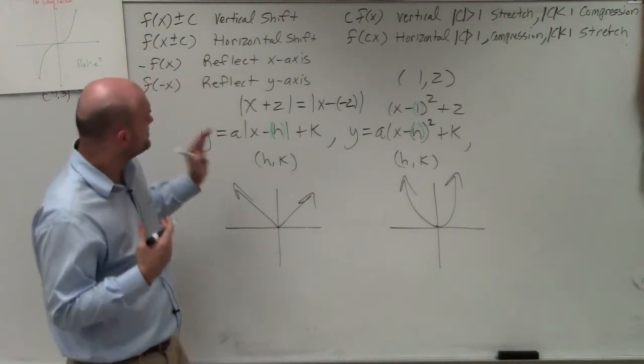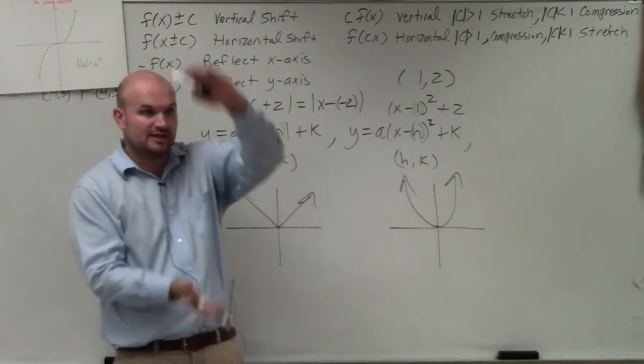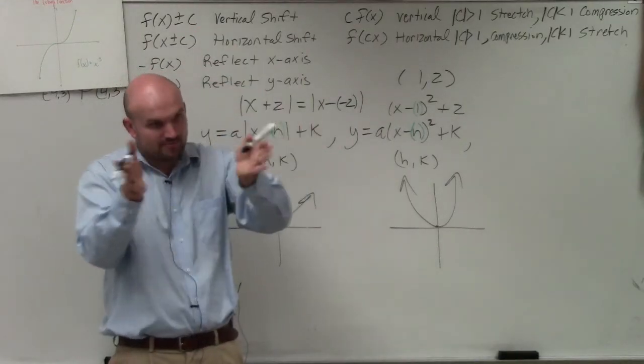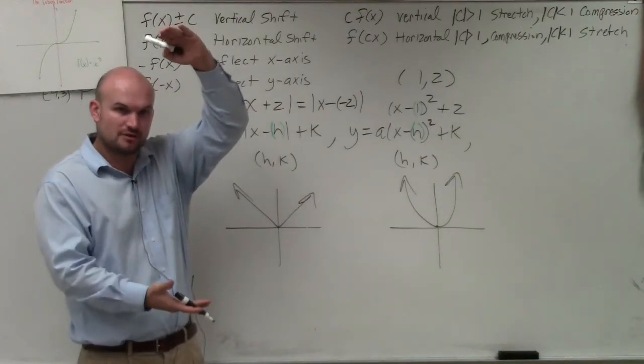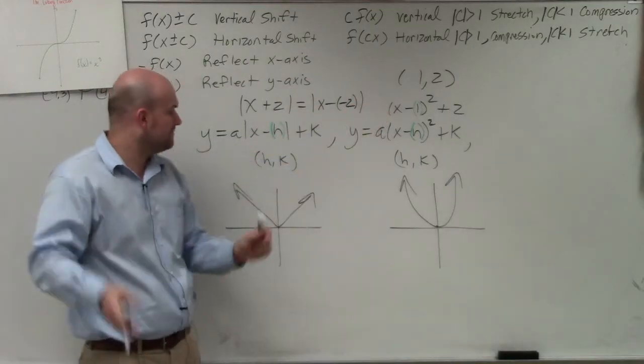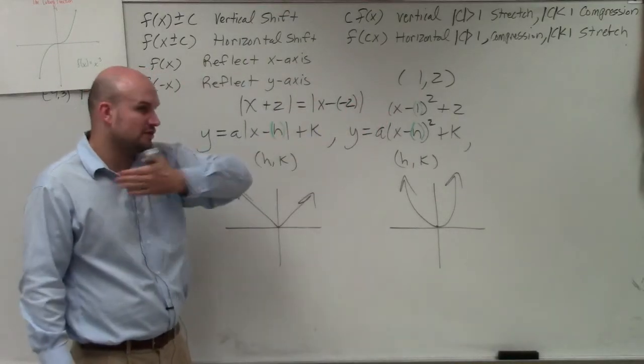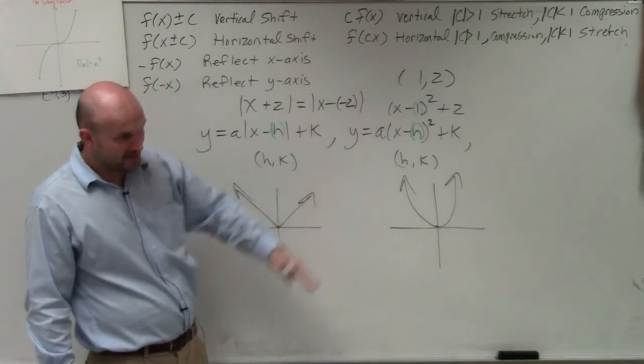So just remember a couple things to go back. a, remember, vertically stretched our graph or horizontally compressed it. Right? If a was a larger number, that made the graph vertically stretched. Correct? If a was like a fraction, that widened it. OK? h and k, h shifted the graph left or right, which is always the opposite value. k shifted the graph up or down.